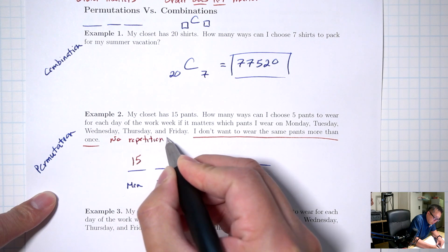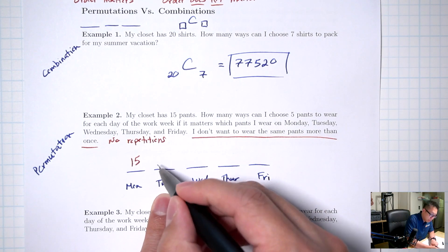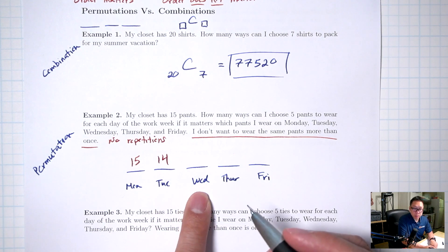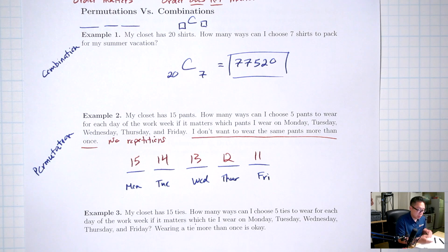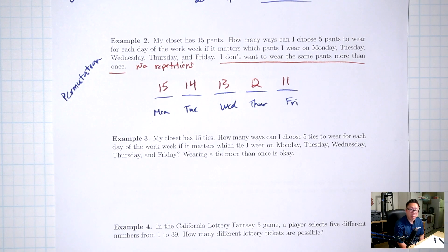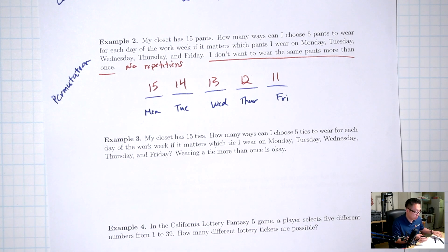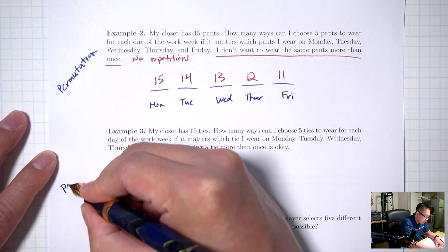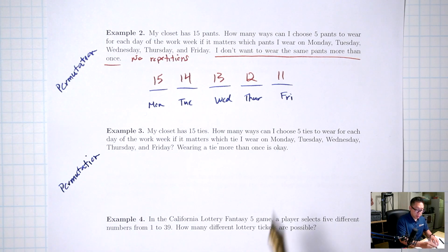Now we're going to mix combinations with permutations from the last lecture. The first thing to decide on every single question is whether it's a permutation or a combination. Permutations: the order does matter — figure out how many blanks you need, then fill in the number of options for each blank. Combinations: the order does not matter — it's going to be something choose something, then use the calculator.